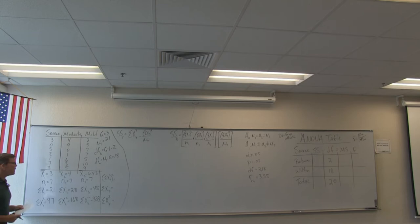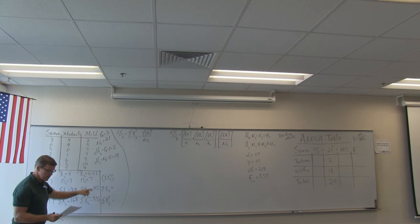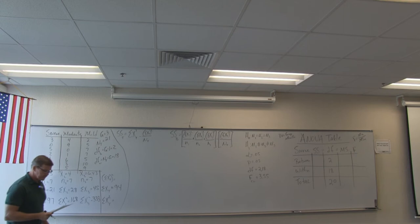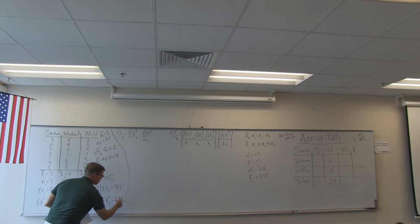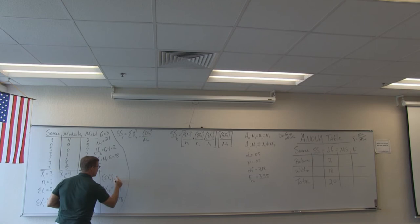We now proceed to summation totals: a sum X total, a sum X squared total, and then we take the quantity sum X total and square it. Sum X sub T — 21 plus 28 plus 45 — gives us 94. Sum X squared sub T — 97 plus 168 plus 333 — gives us 598. Then we take 94 and square it: 94 squared is 8,836. And we are ready to go.